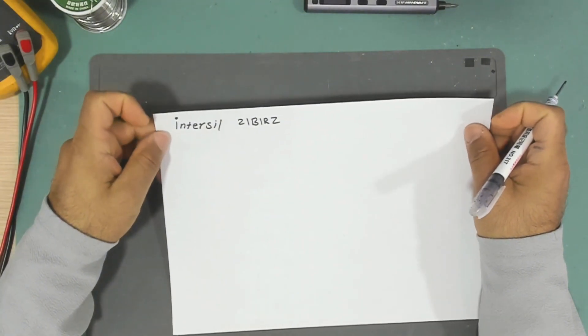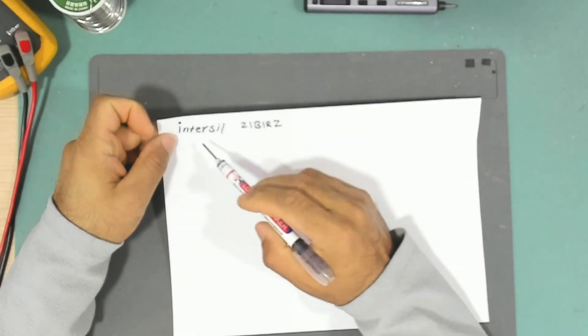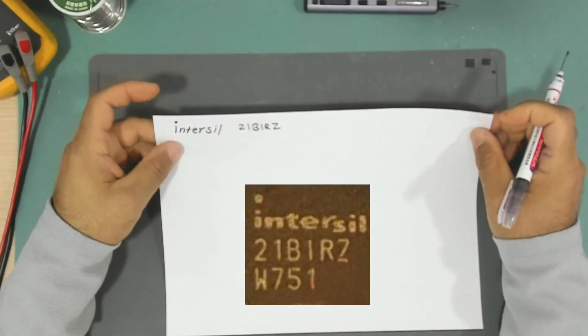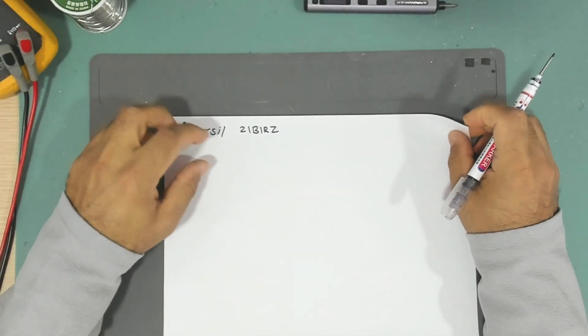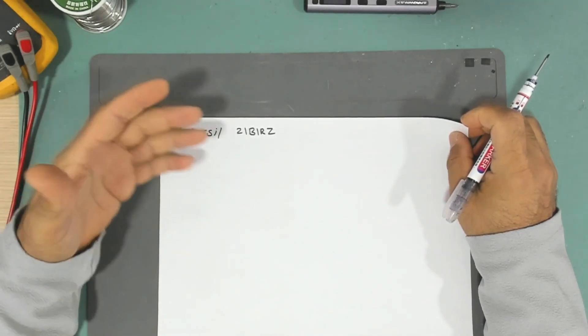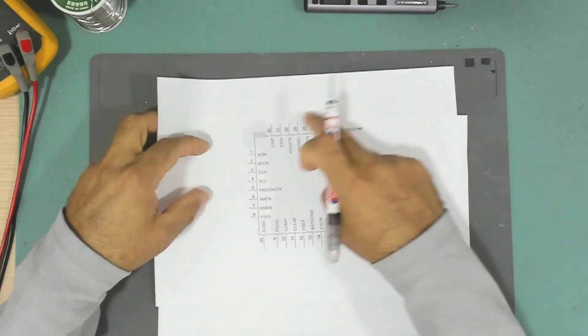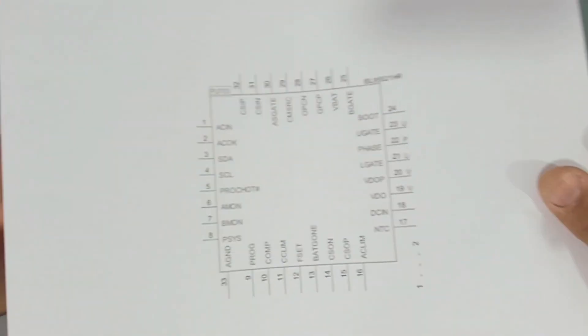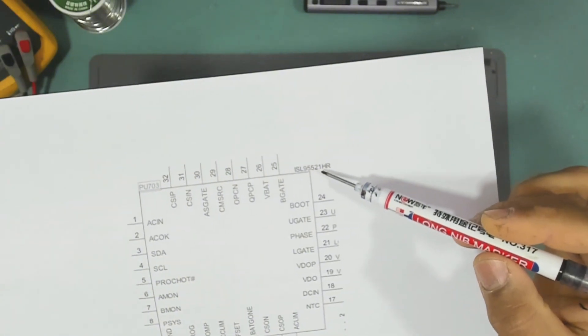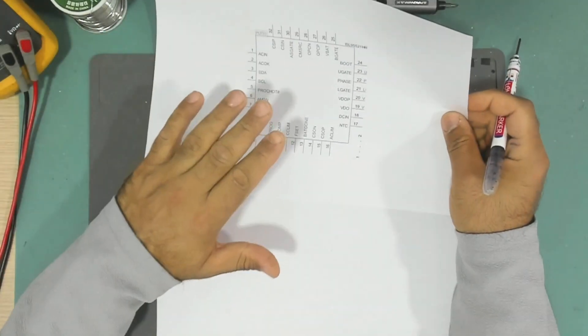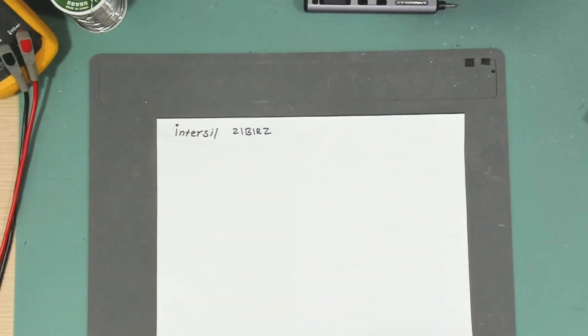I was looking at the motherboard and I saw there is an Intersil IC with a marking of 21P IRZ. This is the charge controller IC. I tried to find any datasheet or schematic for the whole laptop but I couldn't find it. What I found was only this picture from BadCaps, and it is for a different IC which was ISL 95521HR. The one I have is 21P IRZ, so it's a little bit different, but it does help me in diagnosing the issue.